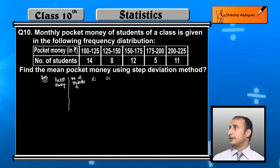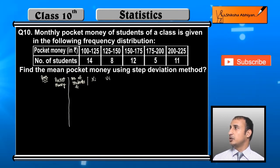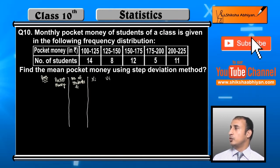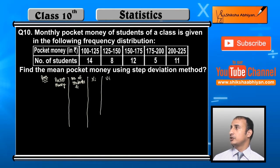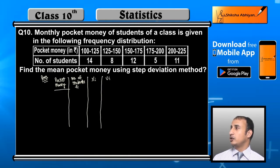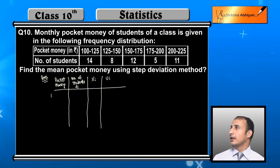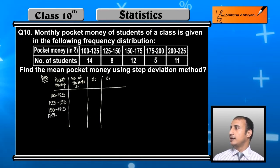Looking at the table, the first pocket money class is 100 to 125, next will be 125 to 150, then 150 to 175, next 175 to 200, and 200 to 225.